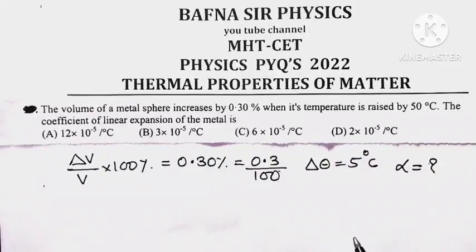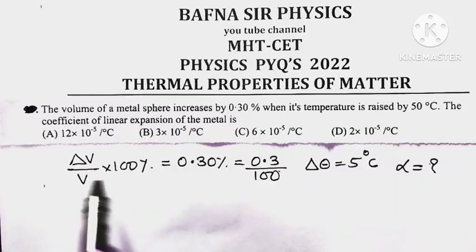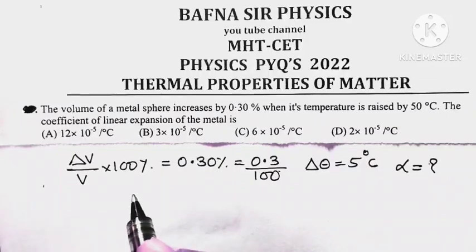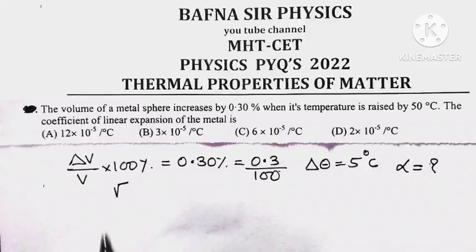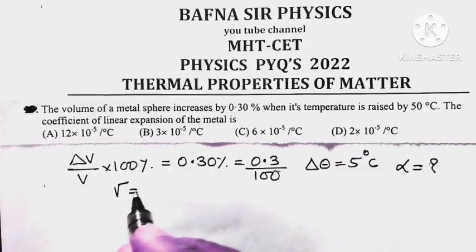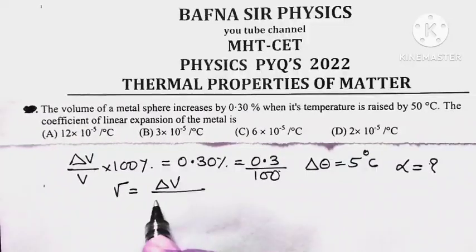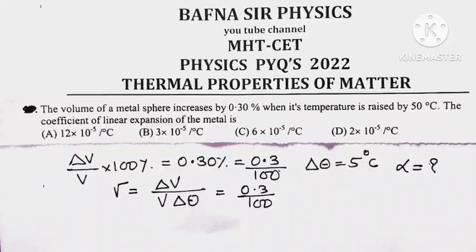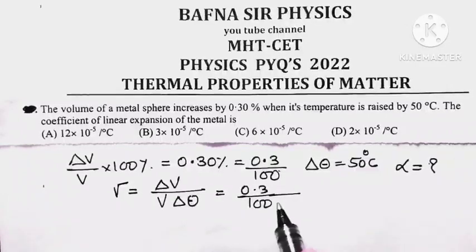We know by definition what alpha is equal to. The coefficient of cubical expansion, denoted by gamma, is defined as change in volume per unit original volume per degree rise in temperature. That is: delta V by V equals 0.3 divided by 100, and delta theta is equal to 50 degrees Celsius.